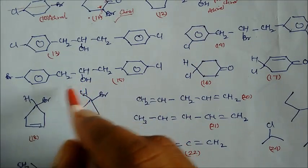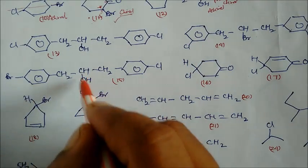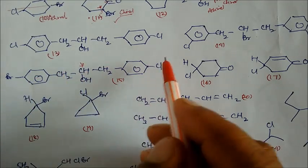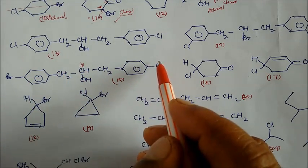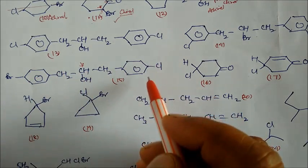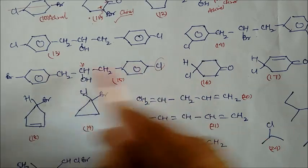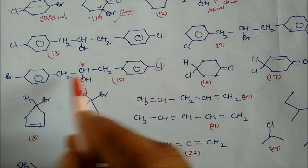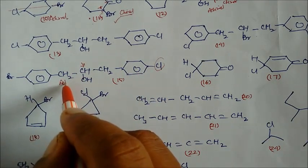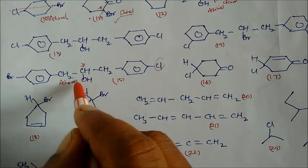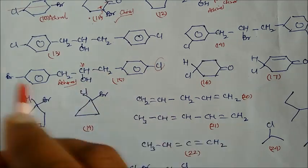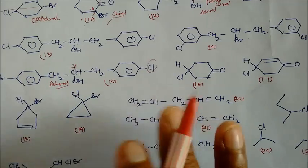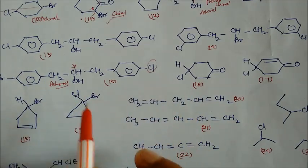Compound 13 — same reasoning. Here Br on both sides are almost similar to each other. This is one of the exceptional cases: Br and Cl are almost similar to each other, so this is also achiral. In every case, Br and Cl will be treated the same if you are taking them as opposite groups.